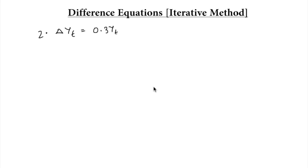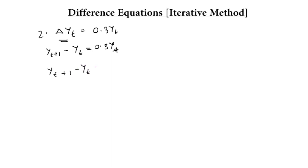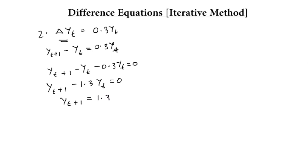Now let's move on to the second type of equation: change in yt is equal to 0.3yt. This can be written as yt+1 minus yt is equal to 0.3yt, which rearranges to yt+1 minus yt minus 0.3yt is equal to 0. Or it can be written as yt+1 is equal to 1.3yt.